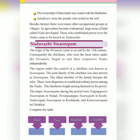The ownership of farmlands was vested with the Brahmins. Adiyars were the people who toiled in the soil — the workers who worked the land are called Adiyars. Besides farmers, there were many other occupational groups in villages.